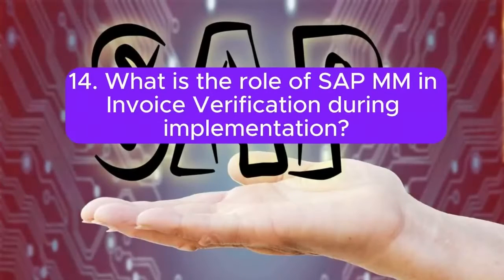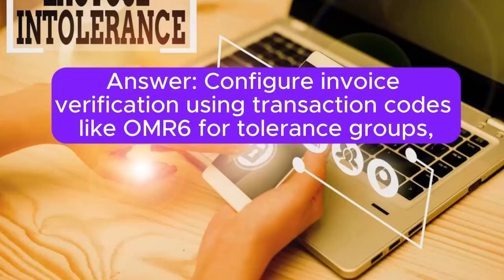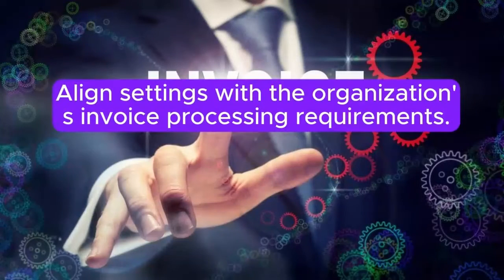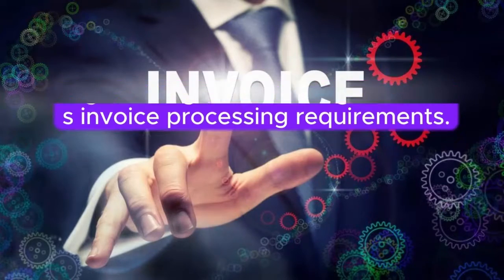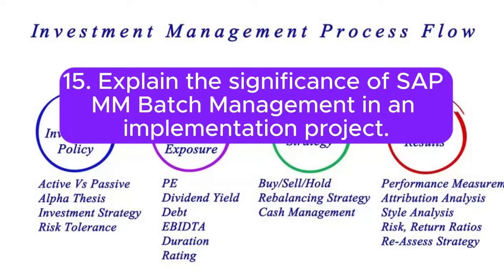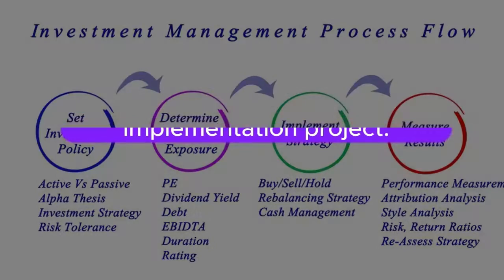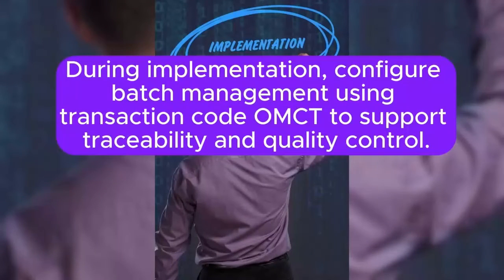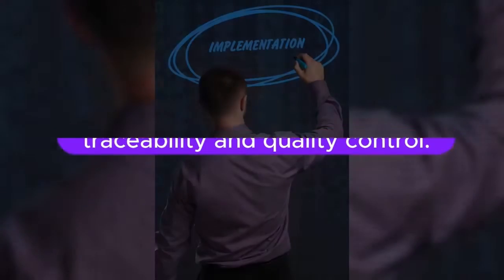Question 14: What is the role of SAP MM in invoice verification during implementation? Answer: Configure invoice verification using transaction codes like OMR6 for tolerance groups, OMCG for default values, and OMXV for number ranges. Align settings with the organization's invoice processing requirements. Question 15: Explain the significance of SAP MM batch management in an implementation project. Answer: Batch management tracks and manages materials based on production or procurement batches. During implementation, configure batch management using transaction code OMCT to support traceability and quality control.